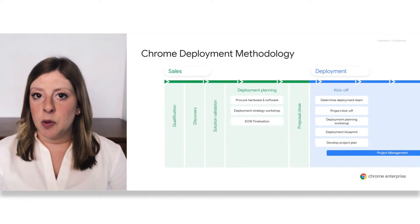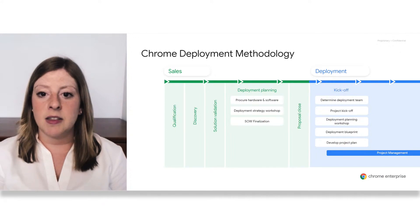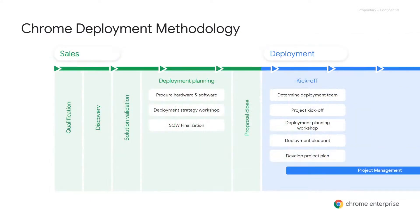As we look through the Chrome deployment methodology, there are a few different areas that we want to focus on as we go through the entire deployment project plan. For those of you who are new to Chrome, if you had just started your deployment, you probably just went through the sales stage where you qualified, did discovery, did solution validation, as well as the deployment planning with your account team. The deployment stage really starts once the kickoff starts.